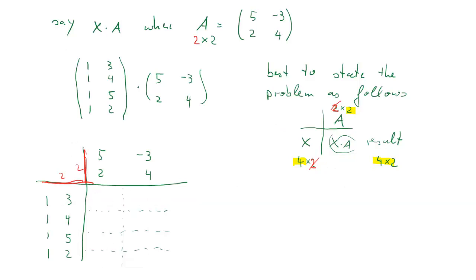So how do we get the elements now? For the 1,1 element we take the first row, first element, multiply with the first column, first element, 1 times 5. And then we add 3 times 2, second element in the first row and second element in the first column.